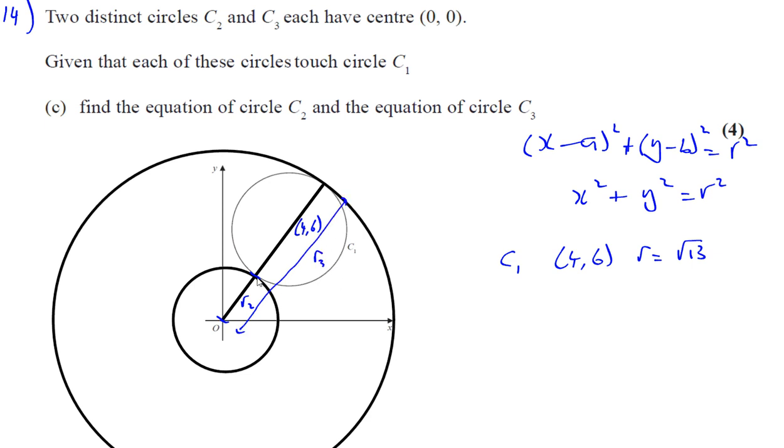If I find R2, which is from here to here, I've got the radius of this circle. If I find R3, which is from the center to that point there, that's going to be the radius of the bigger circle, circle 3. So therefore, I can find the equation of each of these circles.